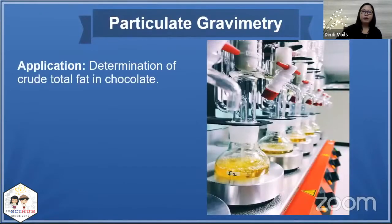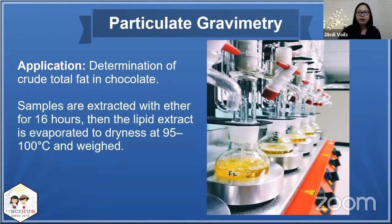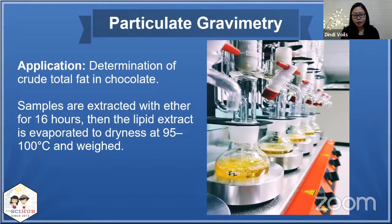Another application of particulate gravimetry is the determination of crude total fat in chocolate. The normal procedure includes extraction of the sample with an organic solvent such as ether for 16 hours, then you let the extract evaporate to dryness at 95 to 100 degrees Celsius and you weigh it.